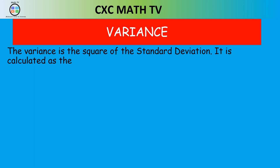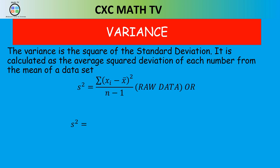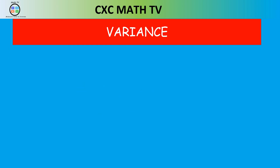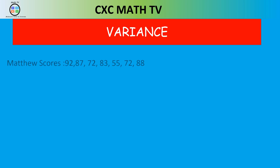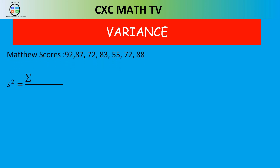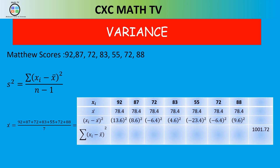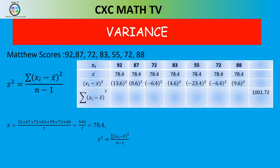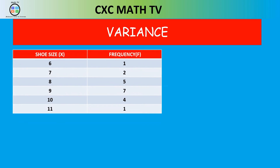Finally, the variance is simply the square of the standard deviation. If you square both sides of the standard deviation formula, you get the variance. For Matthew's scores, the variance = 12.92² ≈ 166.95. For the shoe size data, the variance = 1.21² ≈ 1.48.